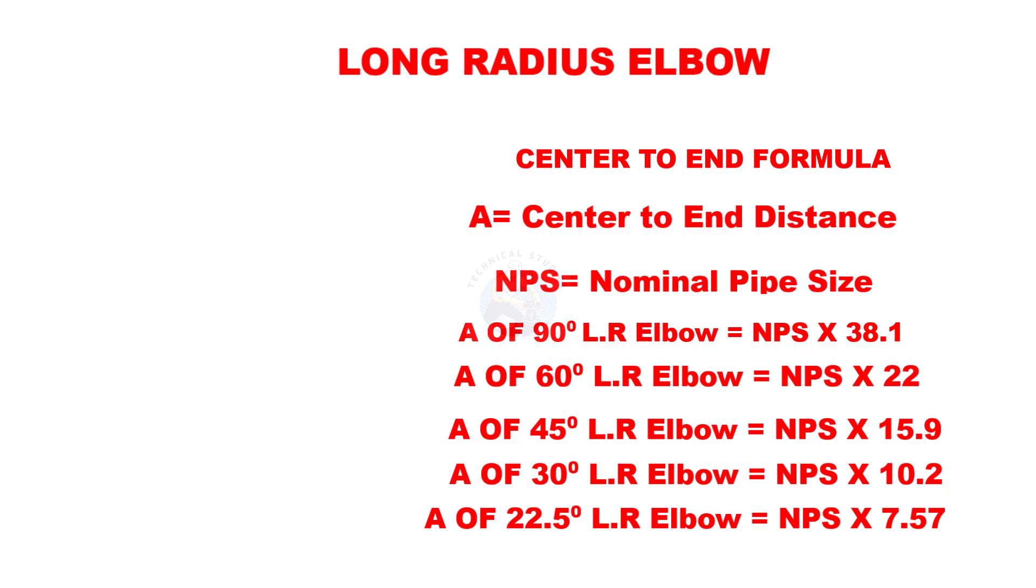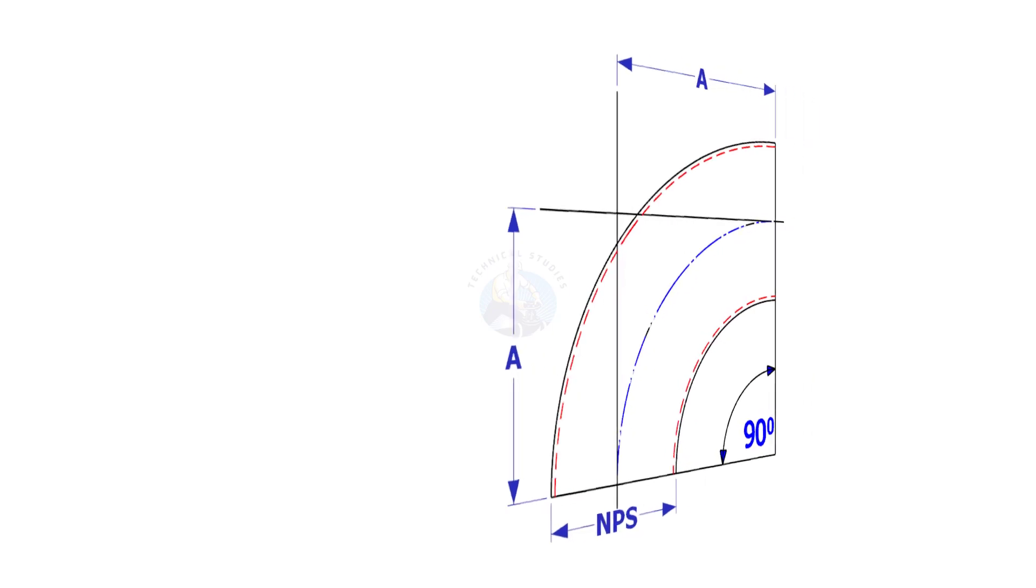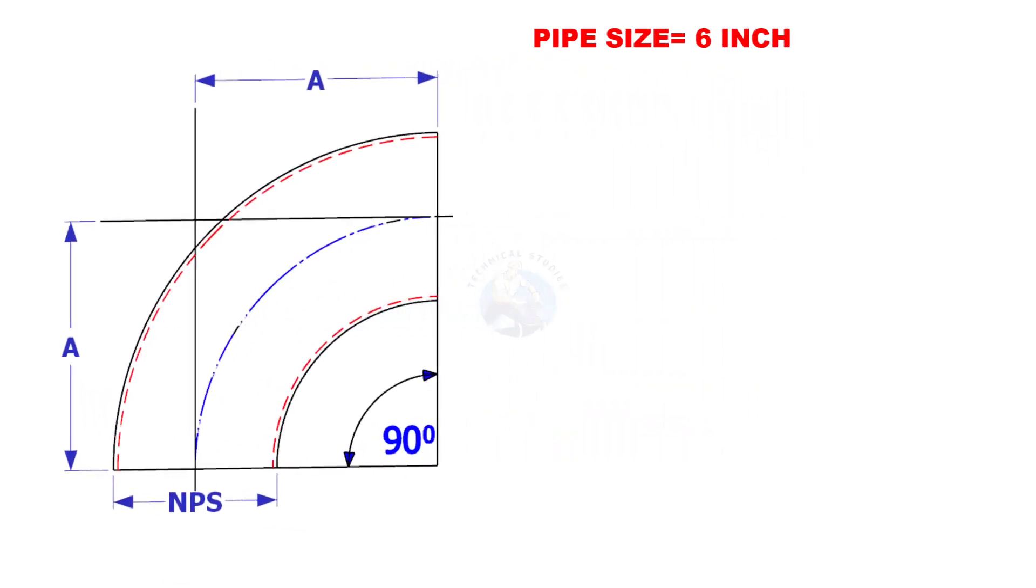Let us try some examples. Assume that the pipe size is 6 inches and the degree is 90. Multiply 6 by 38.1. The centre to end distance of this elbow is 228.6 millimetres.